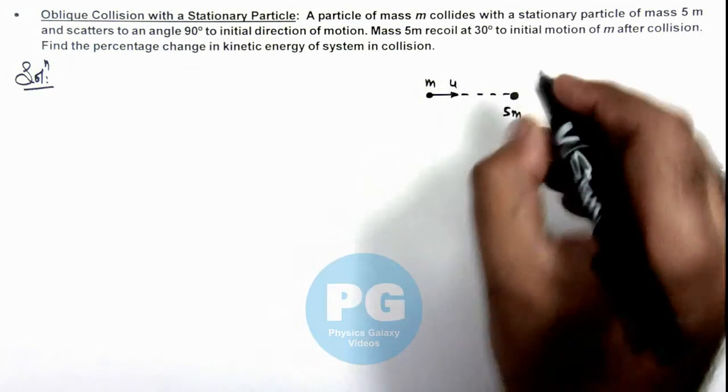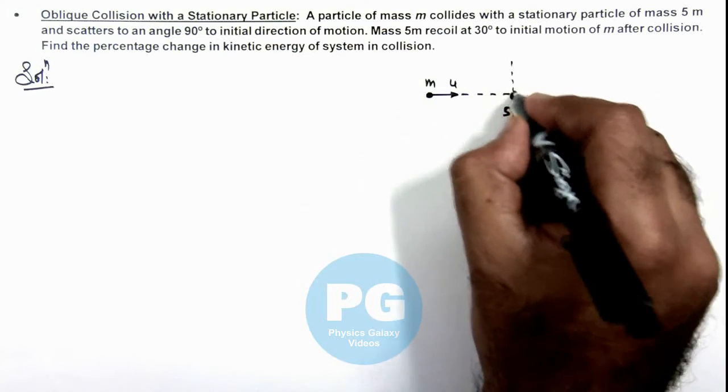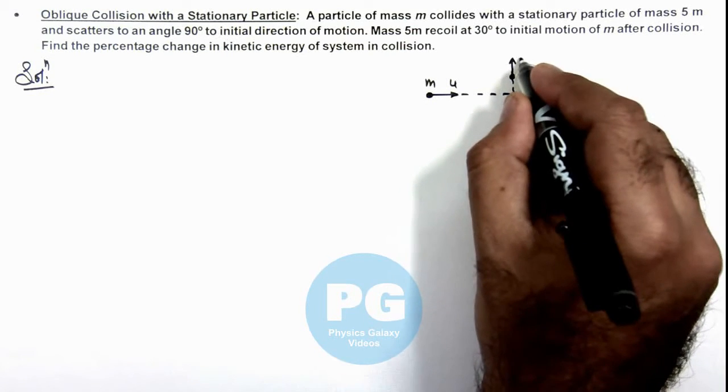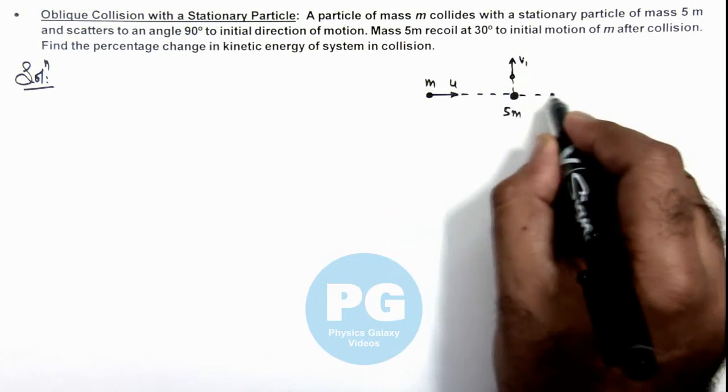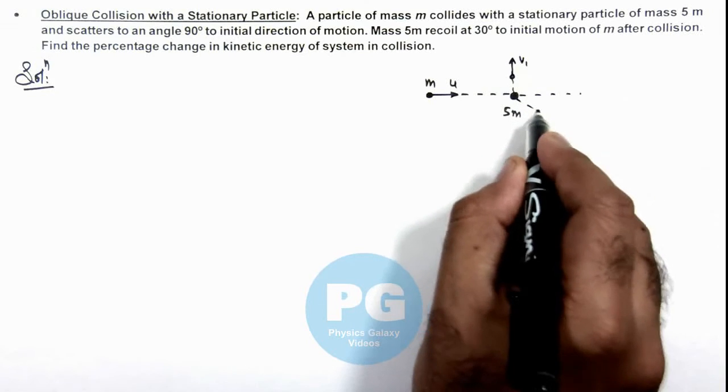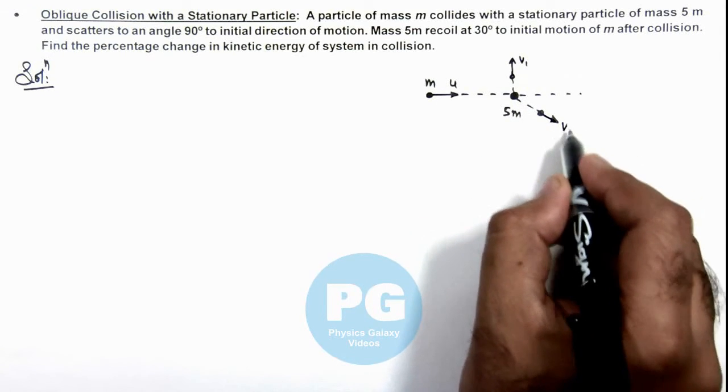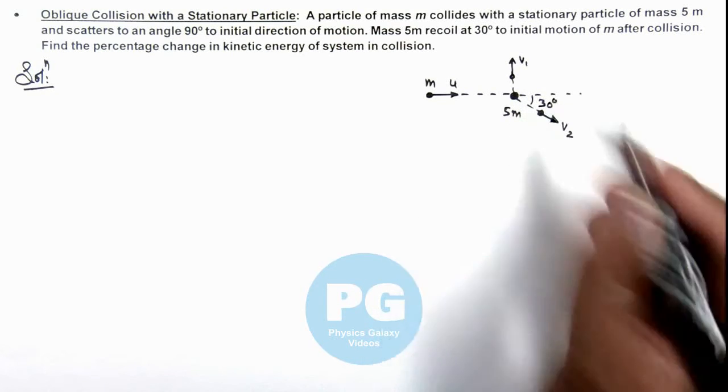And after collision we are given that this mass m scatters at an angle 90 degrees and say it is moving with a speed v1. From the initial direction of motion this 5m recoils say with a velocity v2 and we are given that this angle is 30 degrees.